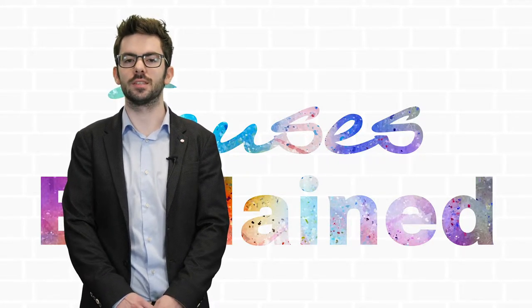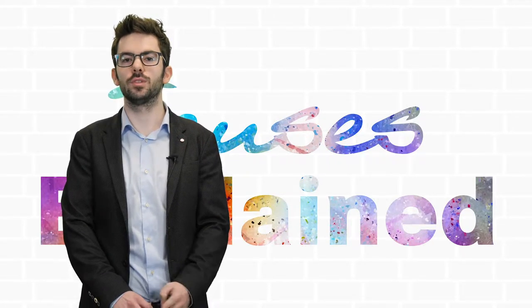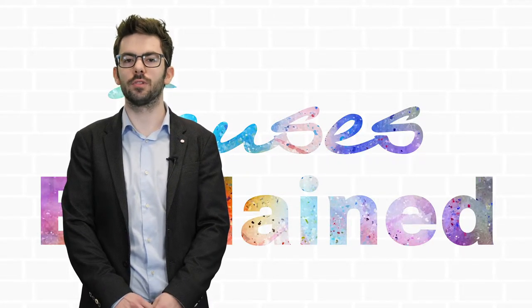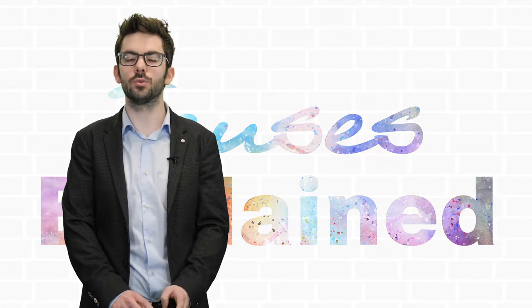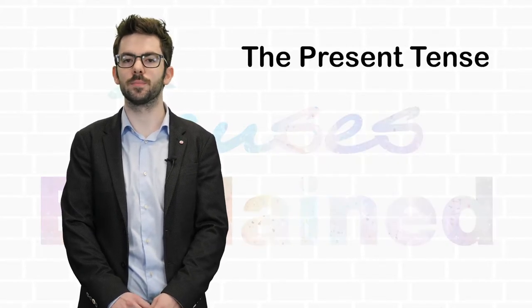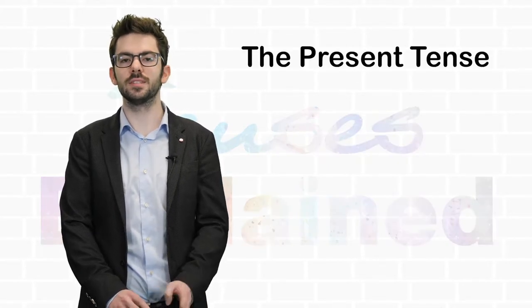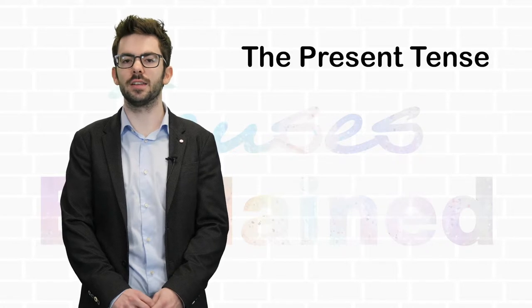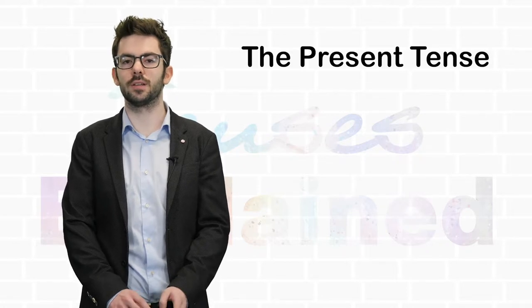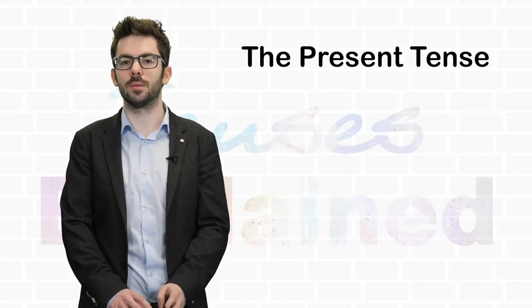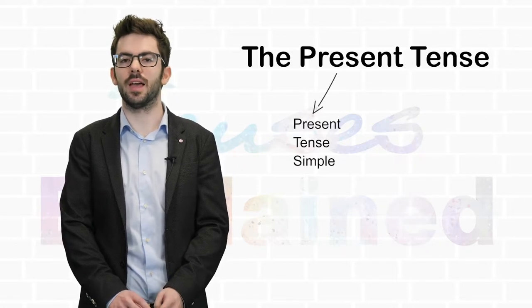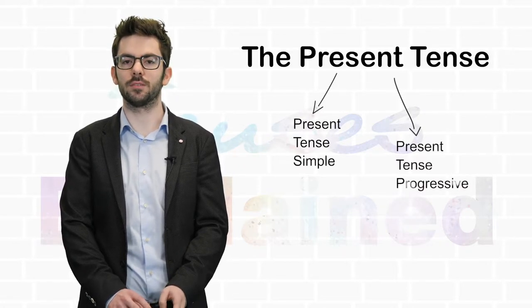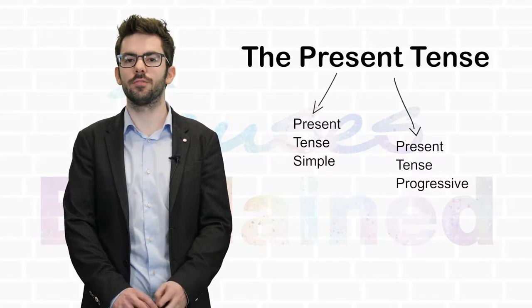Hello and welcome to Tenses Explained. Today we are going to have a look at one of the most common tenses in the English language, the present tense. The present tense can be divided into two basic forms: the present simple and the present progressive. Let's have a look at the simple present first.